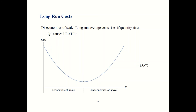Potential misconception to watch out for: the point where average total costs are minimized might look appealing and suggest that the firm should produce at that point. However, that's not necessarily true. You can't make the best decision for the firm by thinking only about the cost side — you also have to reckon with revenue. We'll see in future chapters how firms make that choice, so don't assume that point is always best.